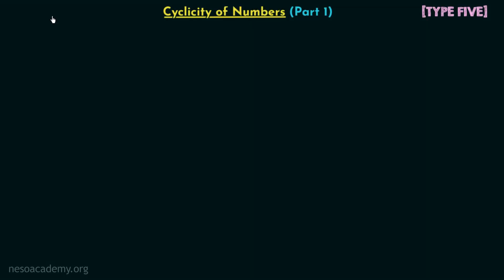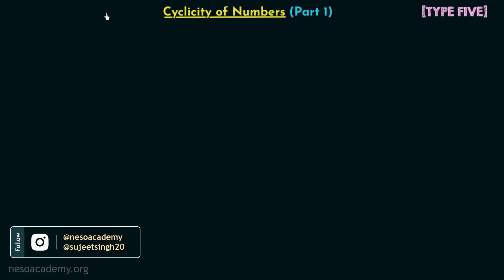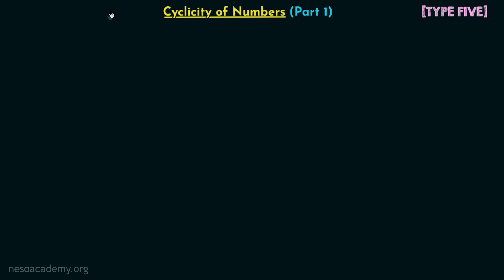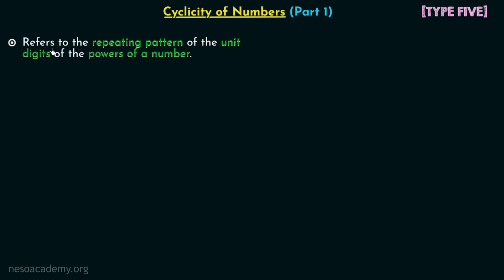In this lecture we are going to discuss the cyclicity of numbers. We will first understand what we mean by the cyclicity of a number, then we will see why we use the cyclicity of a number, and finally we will find out the cyclicity of digits in the decimal number system. The cyclicity refers to the repeating pattern of the unit digits of the powers of a number.